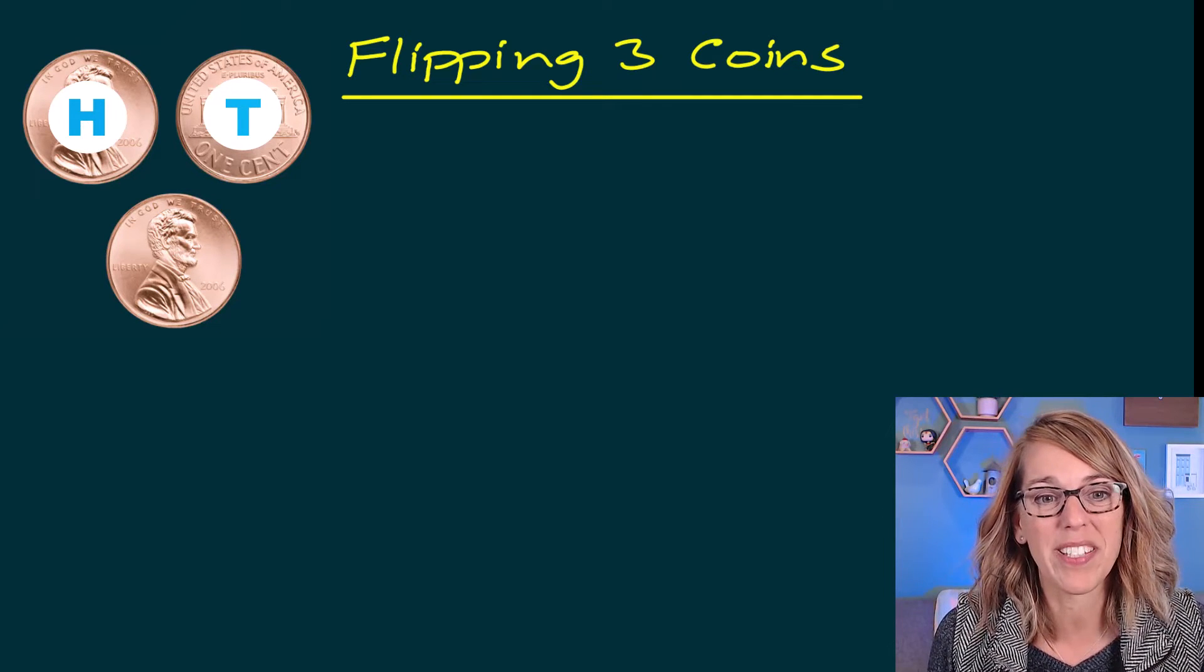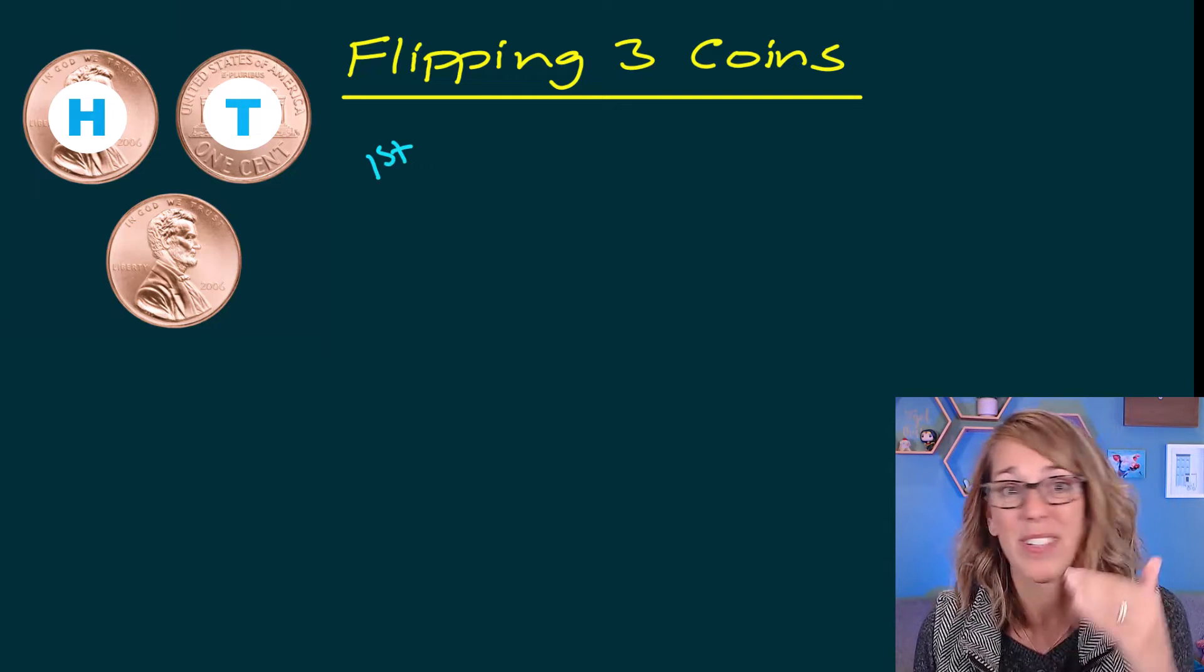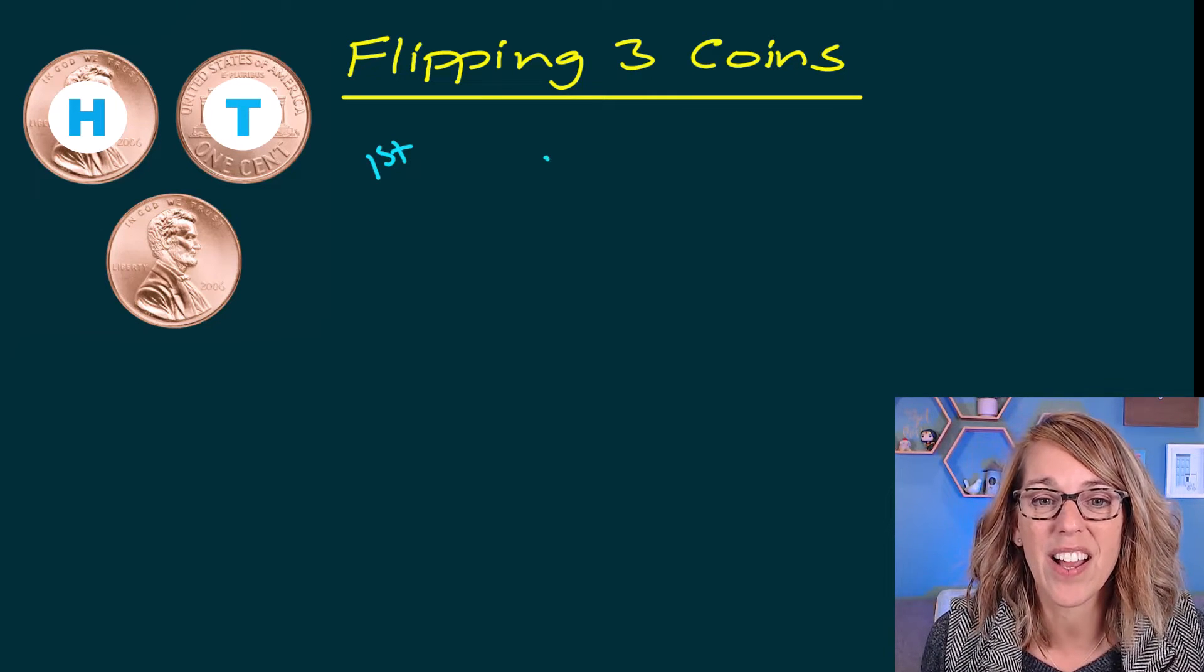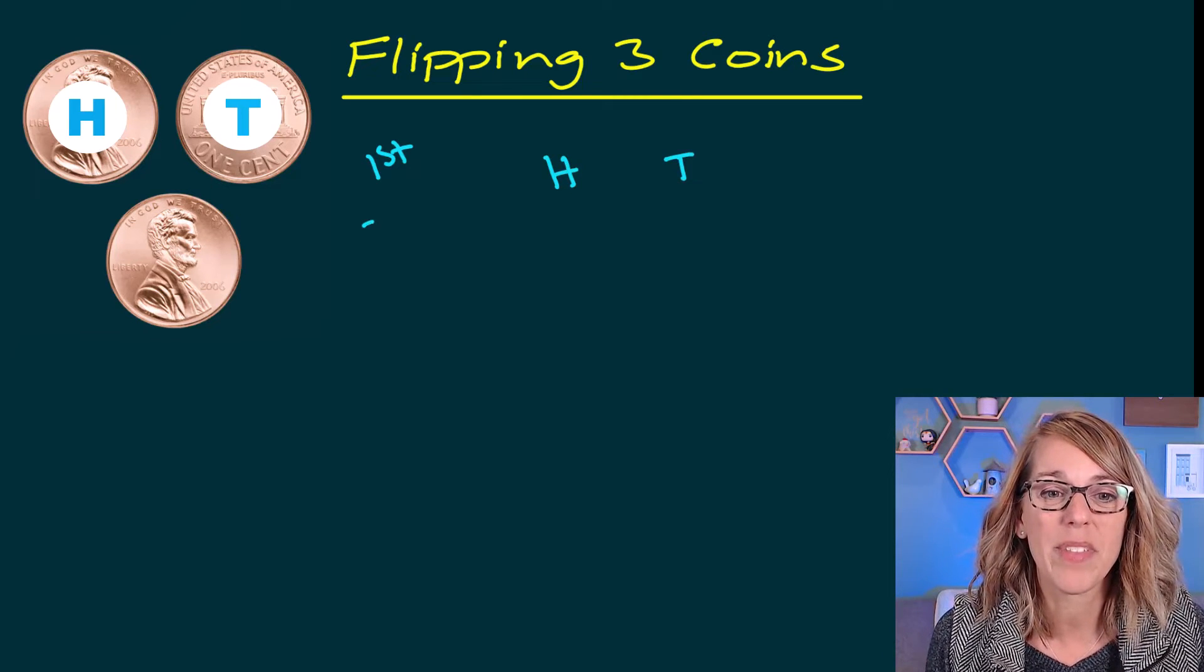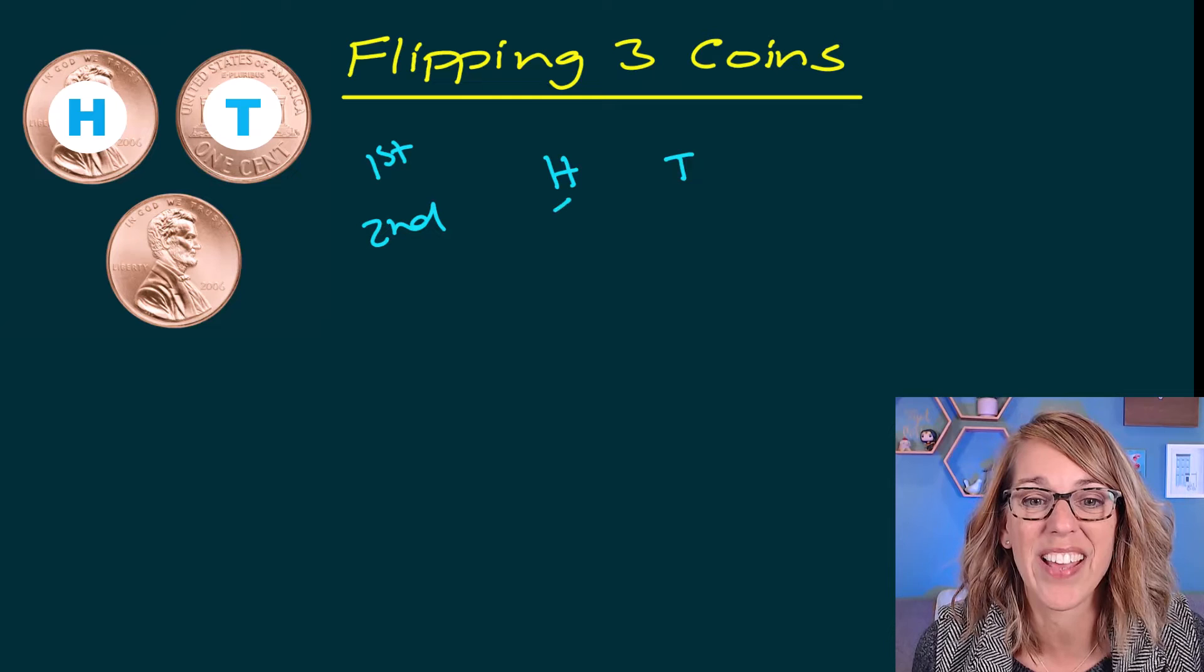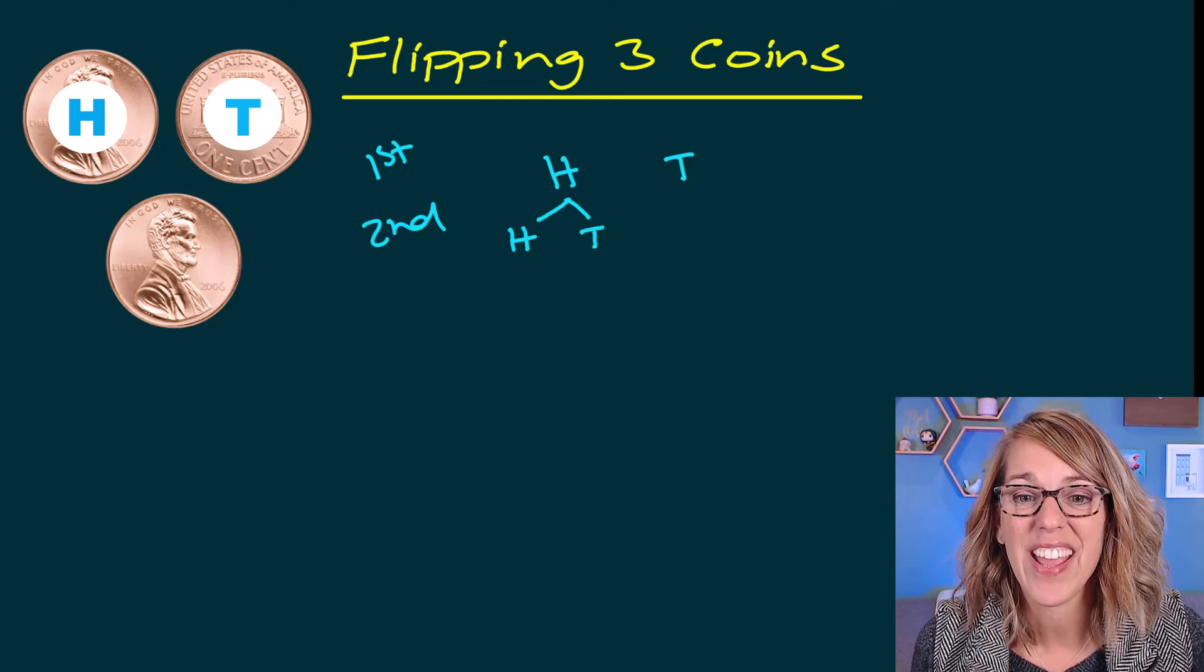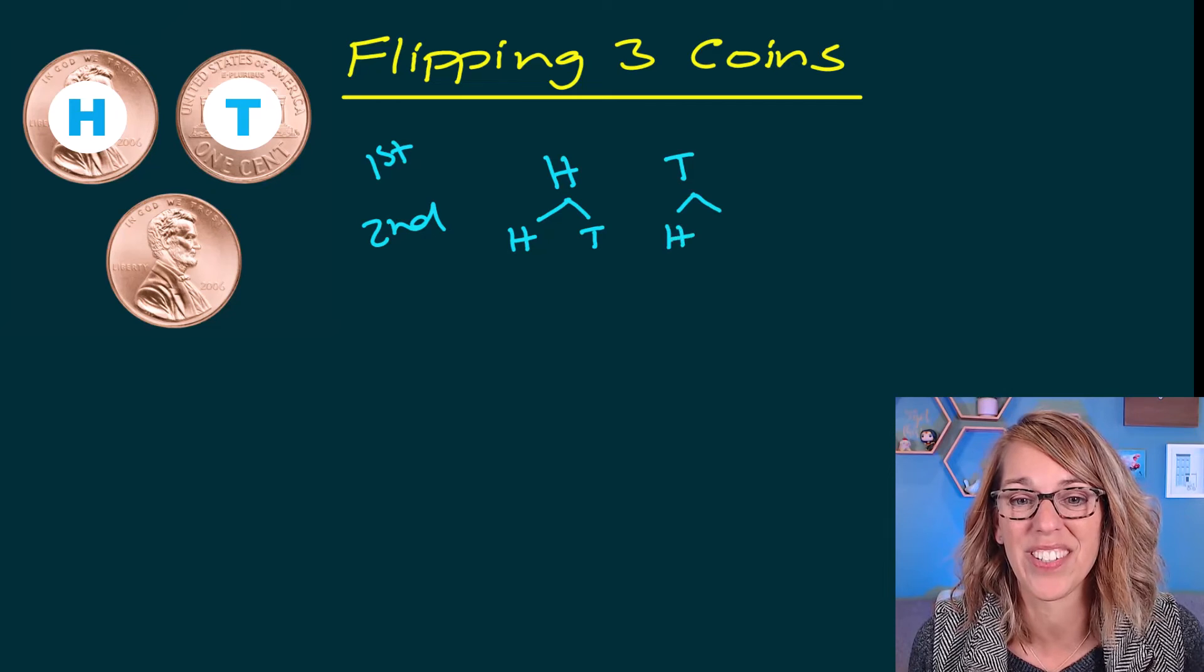When I put my sample space together, I'm going to create a tree diagram based on the results for each coin, all the possibilities. So when I flip that first coin, it could land on either heads or tails. When I flip that second coin, it could also land on either heads or tails. So we're going to branch off. Heads or tails could follow a heads on the first. Heads or tails could follow tails on the first.